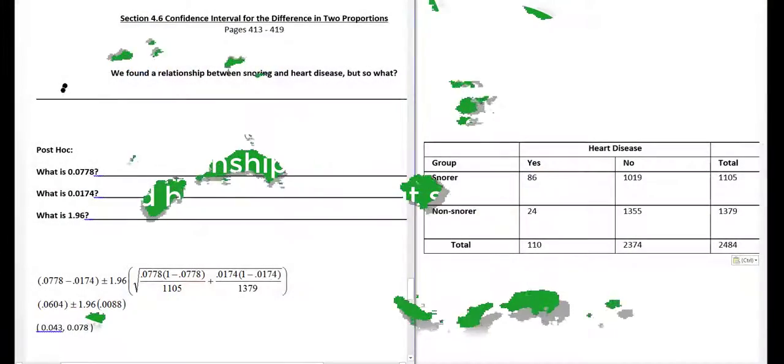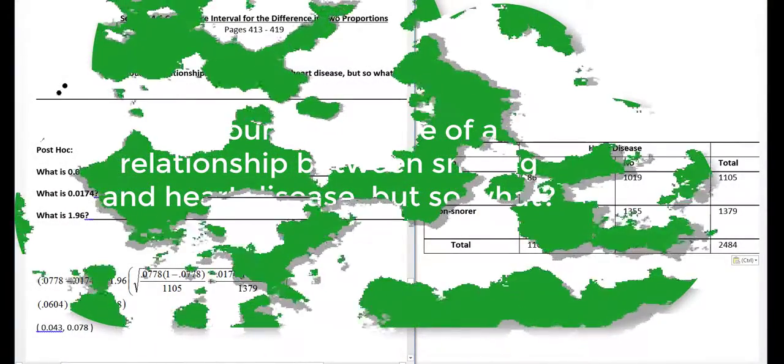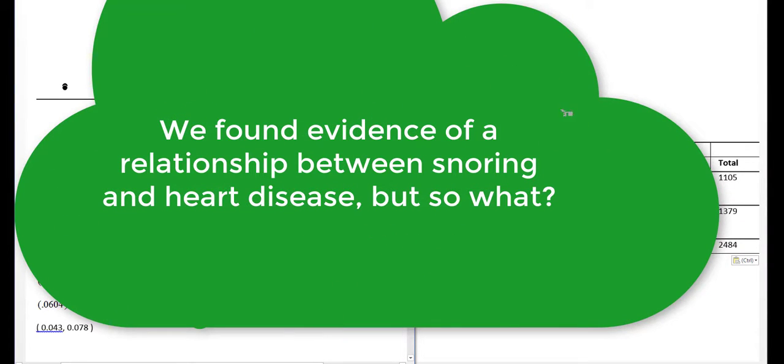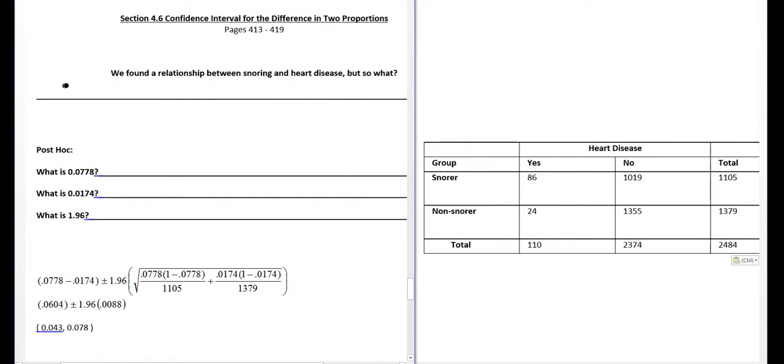We found that there's a relationship between snoring and heart disease. Something that's beneficial to do is to continue to see which group has the higher rate of heart disease. So is snoring protective against heart disease, or does it increase your risk for heart disease? So what we're going to do now is to try to figure out which group has a higher rate. Who has a higher rate of heart disease is a valuable question, because right now all we know is that there's a relationship between disease and snoring.